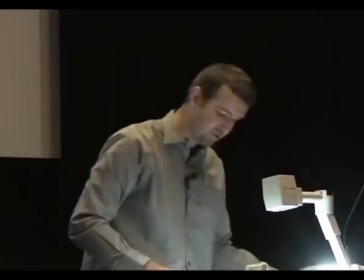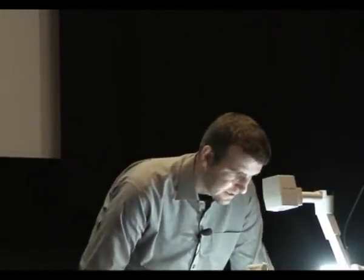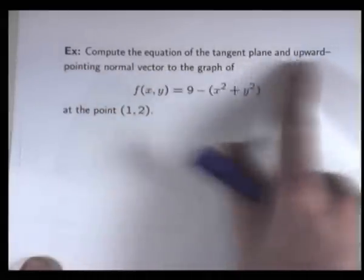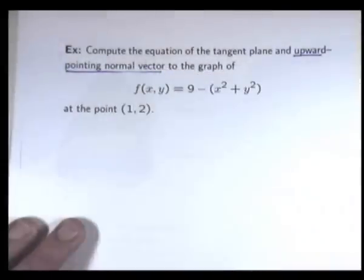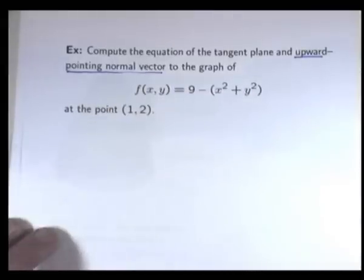So let's actually do a problem and see how this all fits together. We're asked to compute the equation of the tangent plane and upward pointing normal vector to the graph of this function of two variables at this particular point.